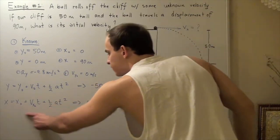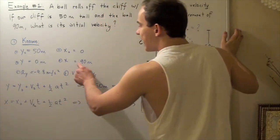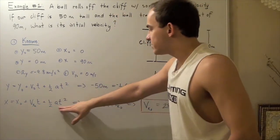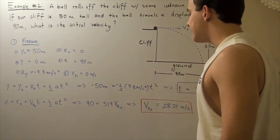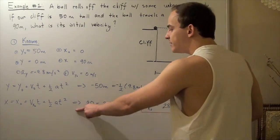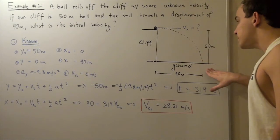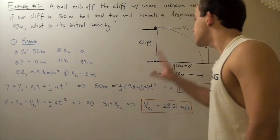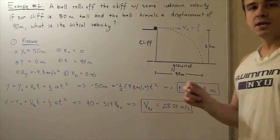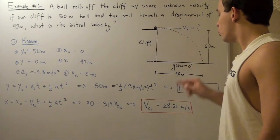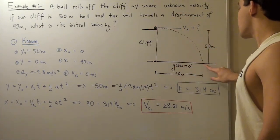Now we use the kinematic formula to find our initial velocity in the x-direction. We plug in 90 meters for x-displacement, 0 for initial x, and since the acceleration along the x-direction is 0, that term cancels. We get 90 equals 3.19 times our initial velocity. Dividing both sides by 3.19 seconds gives us our x-displacement divided by the time in air, and we find our initial velocity along the x-direction to be 28.21 meters per second. So our ball leaves the cliff with this velocity and it propels it 90 meters from the cliff — that's where the ball hits the ground.